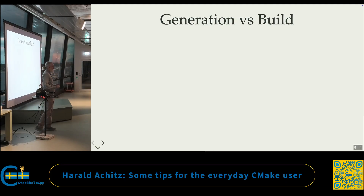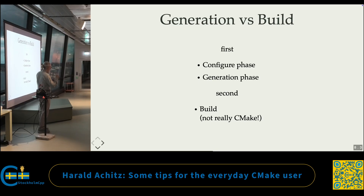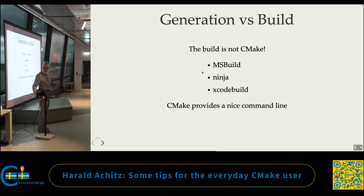Generation versus build. CMake is not your build system — it has two phases. The first is the configuration and generation phase. What it does is generate files based on the generator you pass in: it generates Ninja files, Visual Studio projects, or Xcode projects. If you understand this, you will have easier access to CMake. You still have the build system under the hood doing things. What CMake does is give you a unified command line to call MSBuild, Ninja, or XcodeBuild on the platform you are. You don't need to know the details of those various build systems, but your mental model should be adjusted to this.